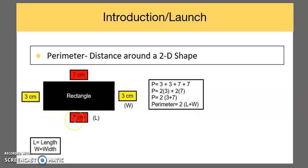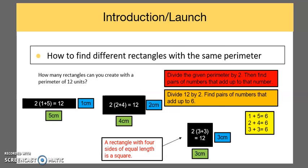So even if we have one length and one width of the rectangle, we can still calculate the whole perimeter, because we know the opposite side is congruent or the same. In addition to this, we're going to look at how we can find different rectangles with the same perimeter.